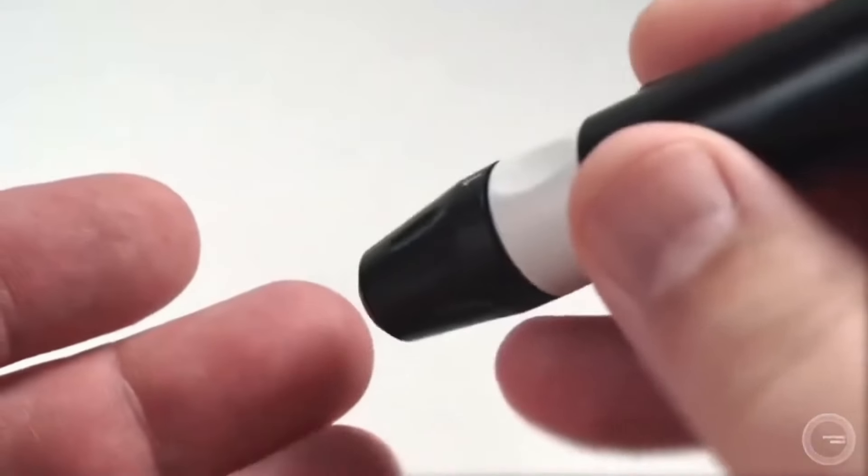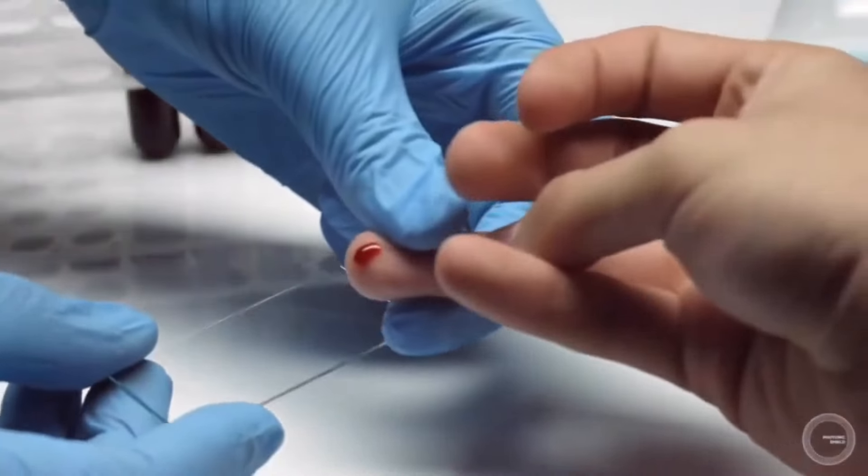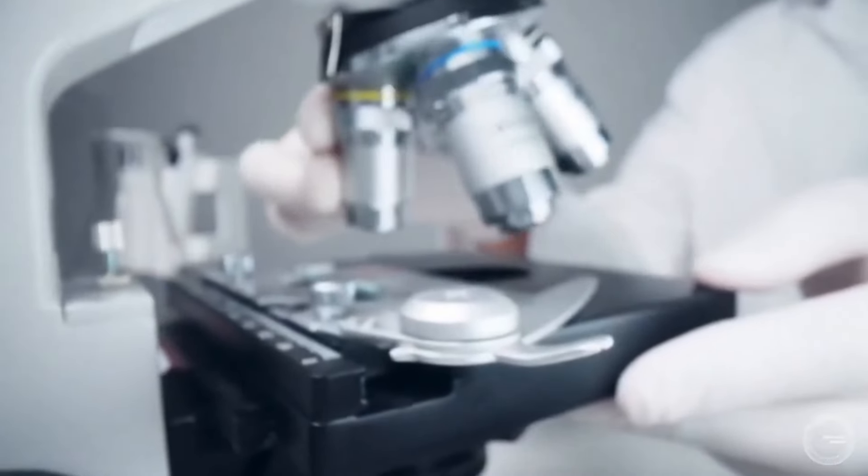During the live blood analysis test, a pinprick needle is used to extract a drop of blood from the tip of the test subject's finger. The sample is placed directly onto a glass slide and examined immediately under a microscope of up to a thousand times magnification.